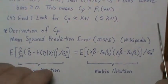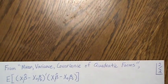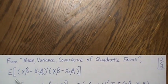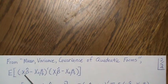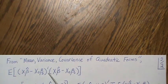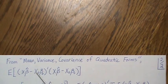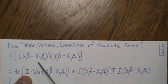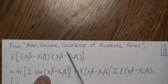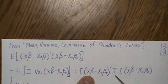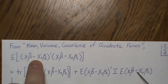We'll look at the numerator first, then divide by the error variance. This expression is a quadratic form — the difference of two vectors with an identity matrix in the middle. Using the mean-variance-covariance of quadratic forms result, the expected value of this quadratic form is the trace of the matrix times the true variance of the vector, plus the true mean of the vector times the matrix times the true mean transposed.